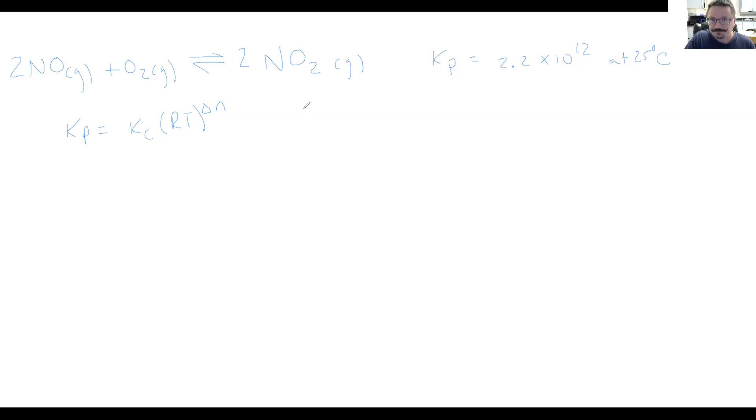That's the moles, gas moles of product minus the gas moles of reactants. So I have NO2, that's my gas, and I have two in front of that. So on the product side, and that's all we have. On the product side, we're going to have two moles of gas.